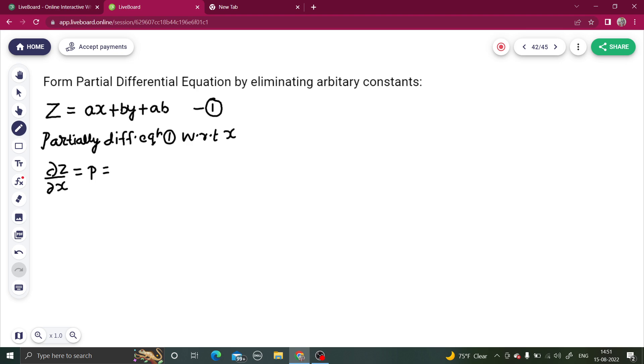And a and b are anyway constant. So you will get a, because derivative of ax with respect to x is a. Let's name this as your equation number two.